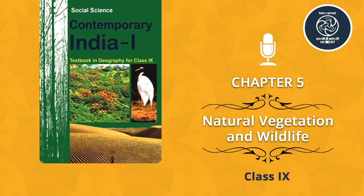Natural vegetation refers to a plant community which has grown naturally without human aid and has been left undisturbed by human beings for a long time. This is termed as virgin vegetation. Thus, cultivated crops and fruits and orchards form part of vegetation but not natural vegetation. Do you know the virgin vegetation which is purely Indian is known as endemic or indigenous species, but those which have come from outside India are termed as exotic plants.